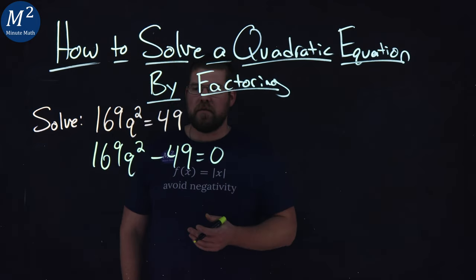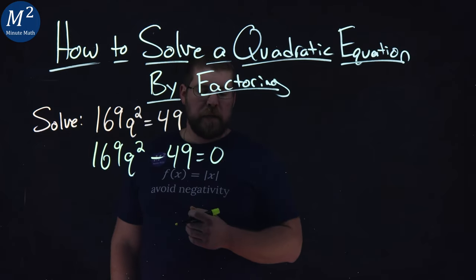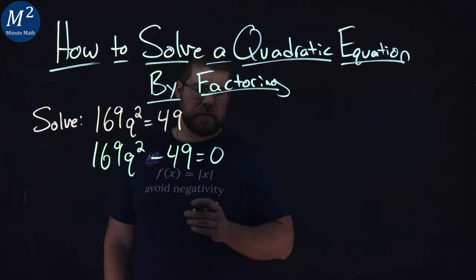Now when I first look at this, it's like, what the heck am I supposed to do? Can I pull something out of both equations? But at first, I then look at 49.